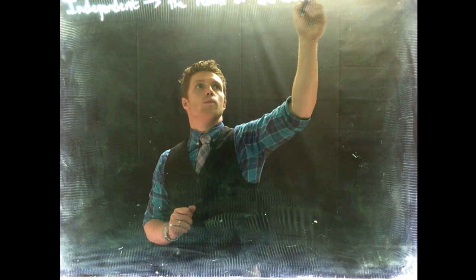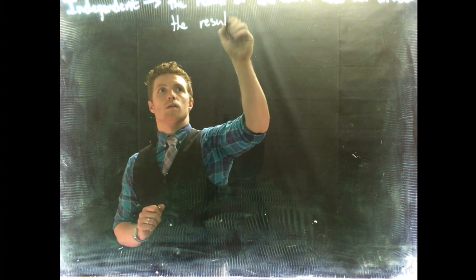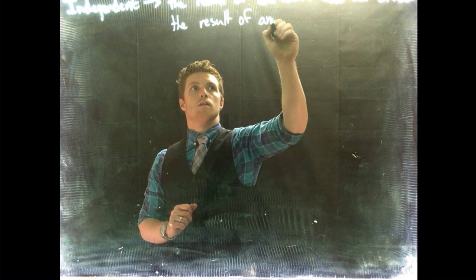Now that we've talked about conditional probabilities, we've got enough to talk about how we determine if two events are independent. So let's talk about independent events. Here we want to talk about where the knowledge or result of one event does not affect the result of another event. Two events are determined to be independent if the result of one event does not affect the result of another.